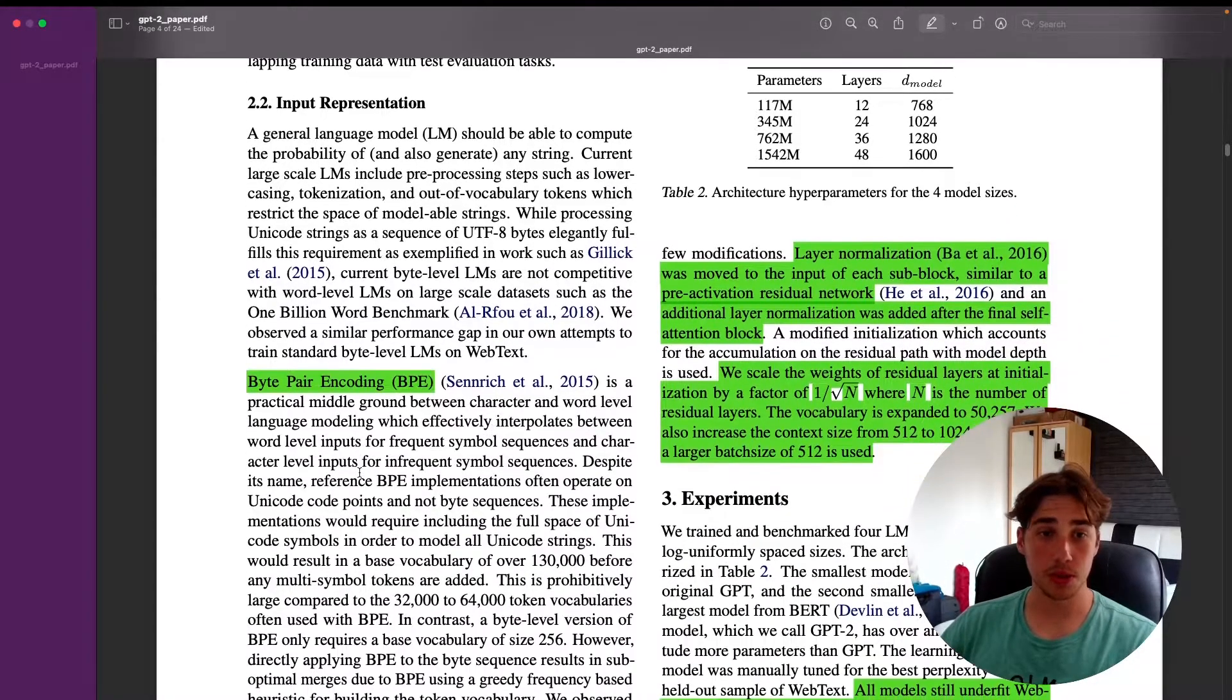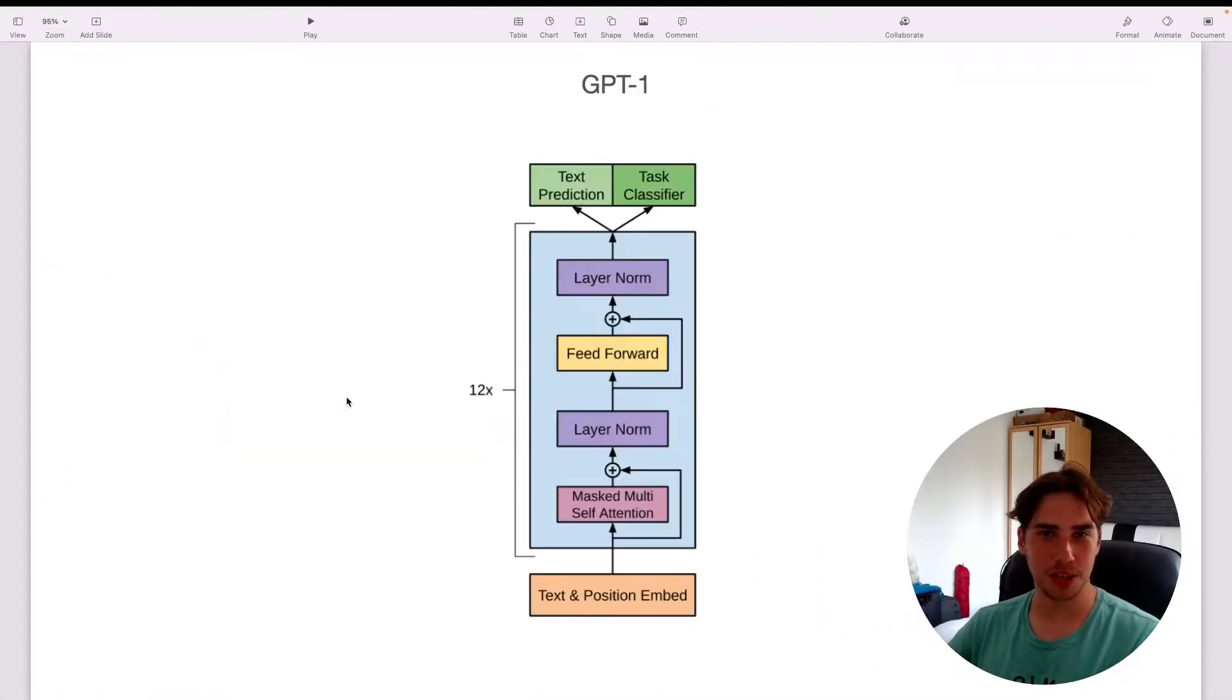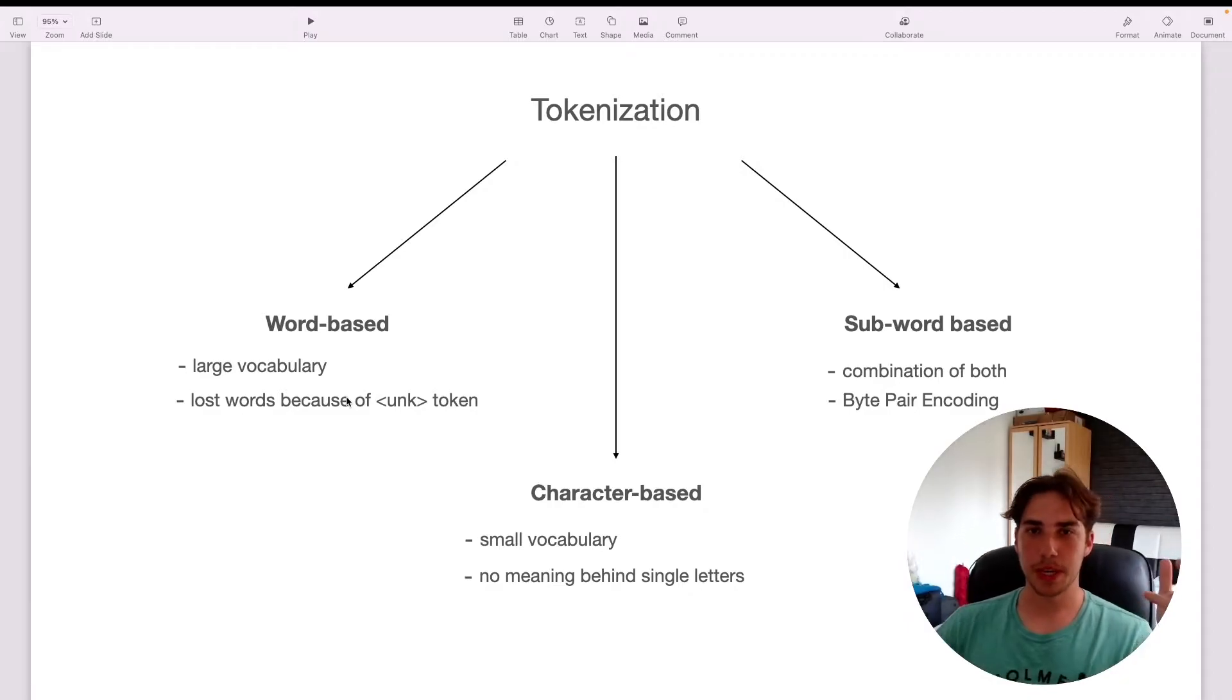When they got the dataset, obviously they need to tokenize it. They used byte pair encoding, and I haven't described it in a previous video on GPT-1—if you haven't watched it, I really recommend it—but I'm going to do it right now. We can tokenize the input in three ways. We can do word-based tokenization, so we basically give an index for each word that we get. But in this fashion we end up with a really large vocabulary, but obviously we've got limited space for vocabulary. A lot of words end up as an unknown token because they occur only once.